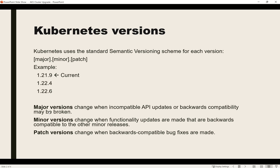The patch version is updated very frequently, almost every week — mostly bug fixes and security fixes. If you are on a particular version, it's highly recommended to update patch versions to have all bug fixes and security patches. You can plan minor version upgrades in the future. If your cluster is currently on 1.18 and you want to go to 1.22, you must upgrade step by step: 1.19, then 1.20, then 1.21.